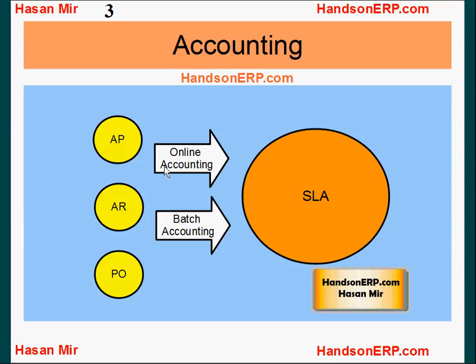Accounting is produced from all the subledgers in the system including payables, receivables, purchasing, asset management and so on. And this accounting is sent over to the subledger accounting module.